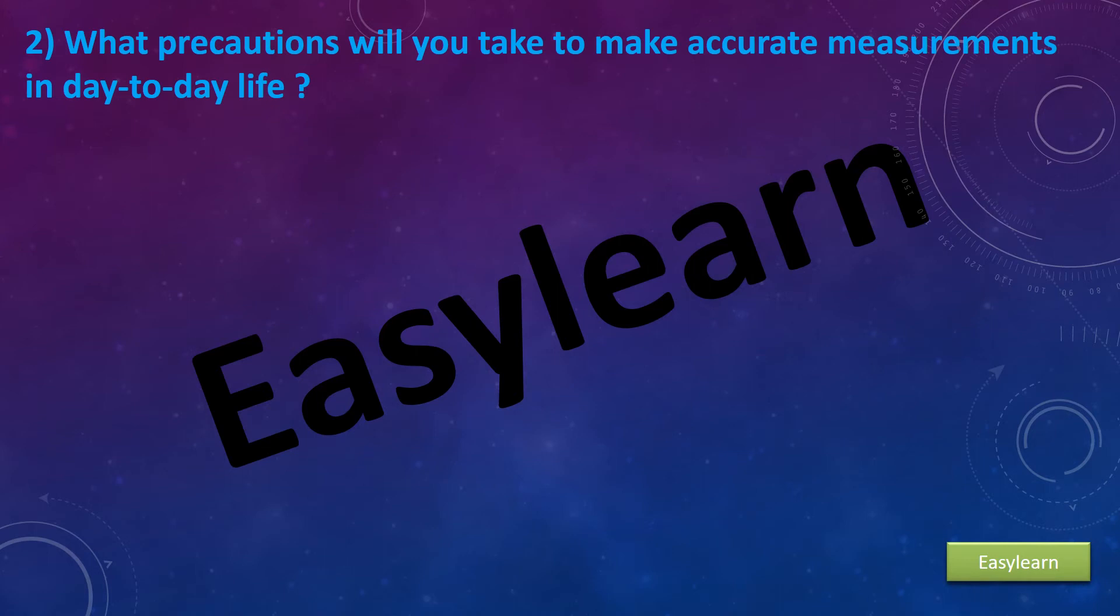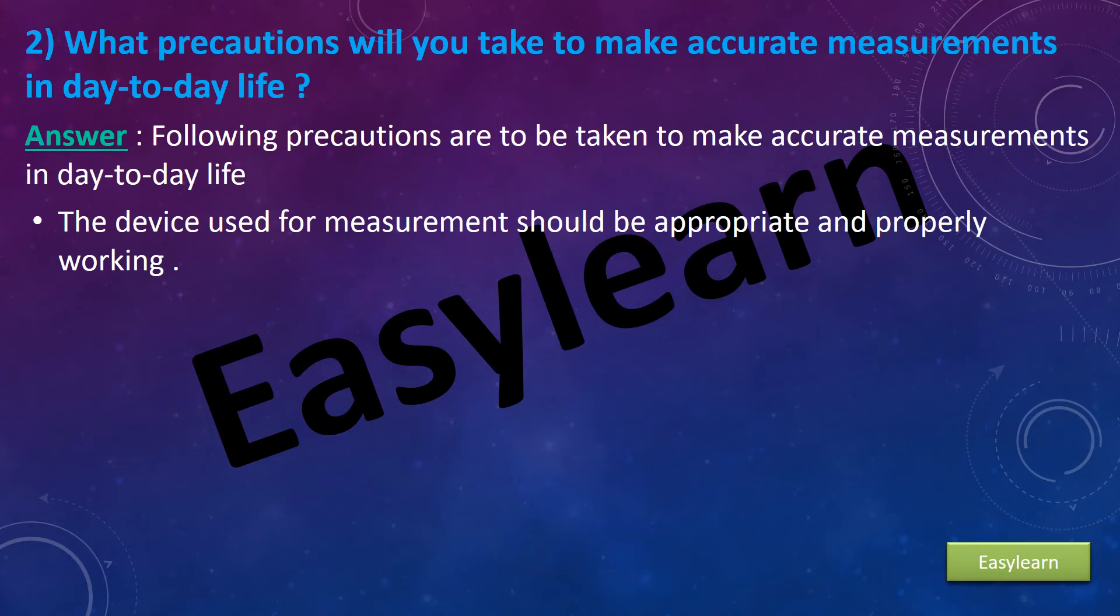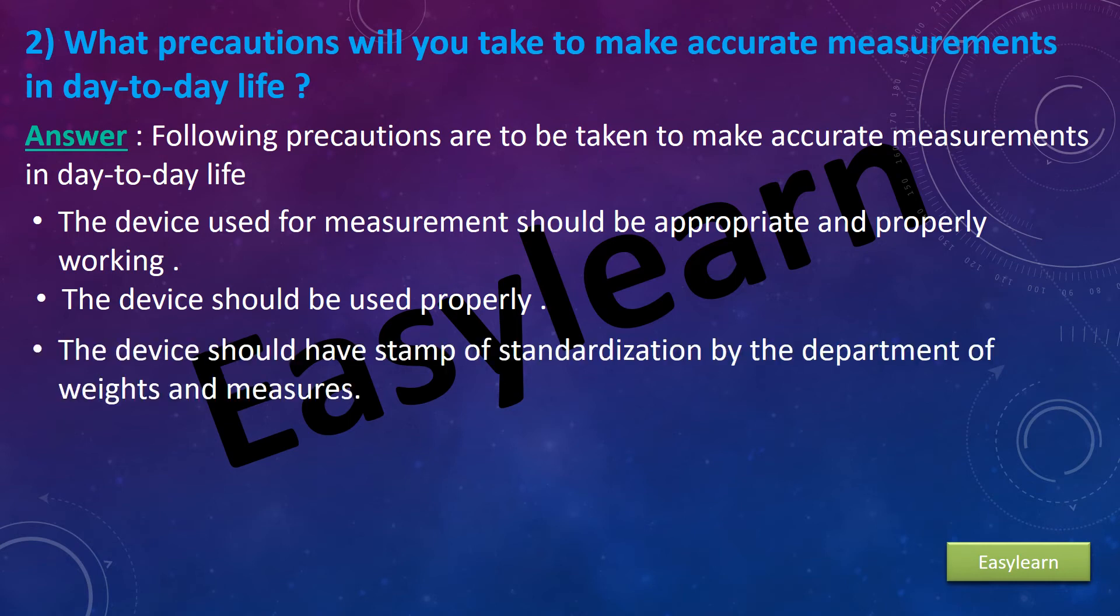Second, what precautions will you take to make accurate measurements in day-to-day life? Answer: Following precautions are to be taken to make accurate measurements in day-to-day life. First, the device used for measurement should be appropriate and properly working. Second, the device should be used properly. Third, the device should have stamp of standardization by the department of weights and measures.